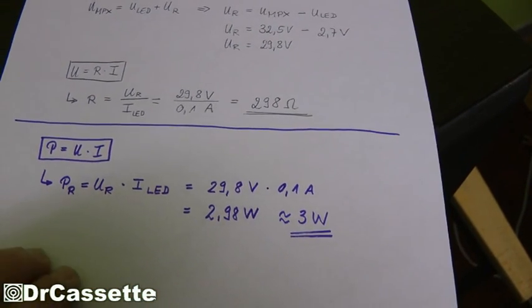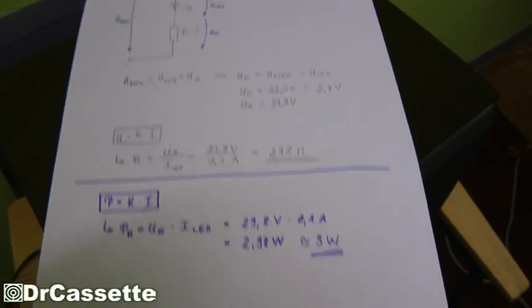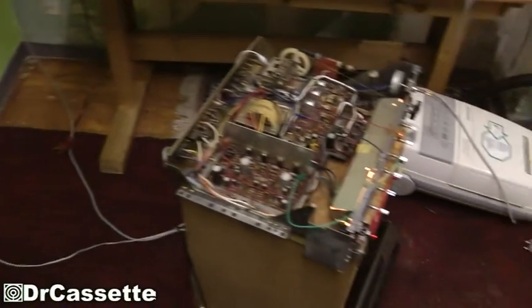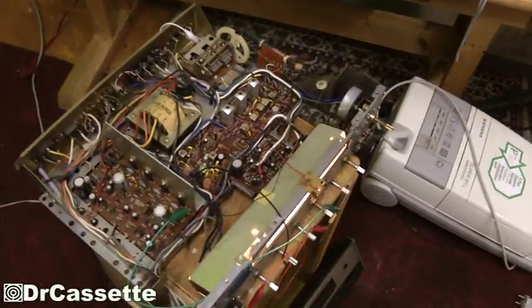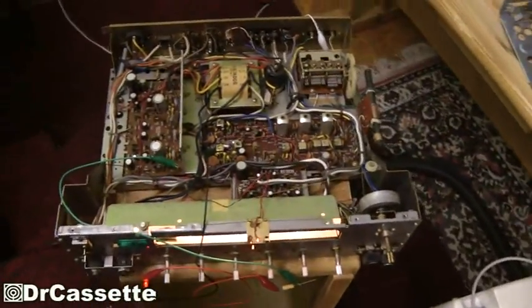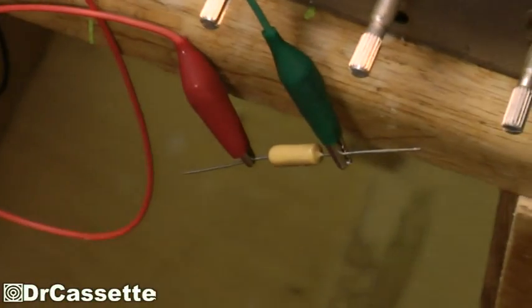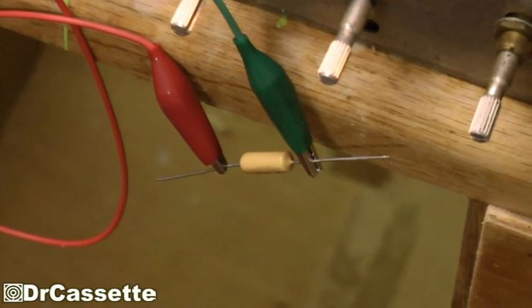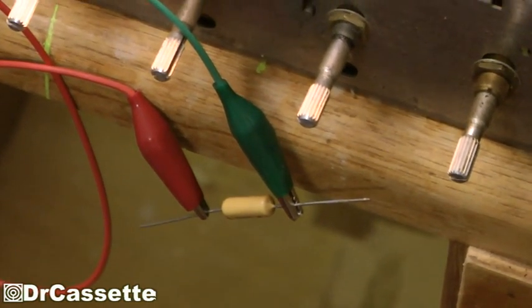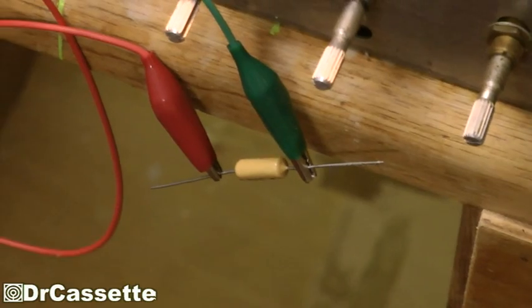So here we are. 29.8 volts times 0.1 ampere equals 2.98 watts. And that's around about 3 watts. So that's the value that you need. Now once again, since I'm living out of a very, very big parts bin, I happen to have this resistor which actually has 300 ohms and 5 watts. So that is extra safe.